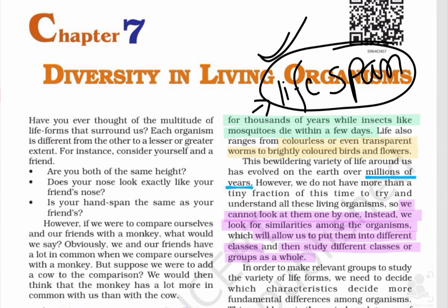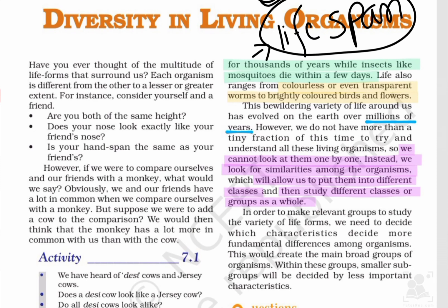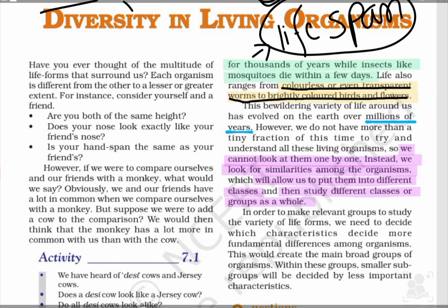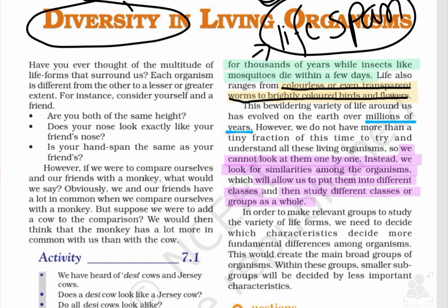Life also ranges from colorless and even transparent worms to brightly colored birds and flowers। अब यहाँ पे color characteristic की बात हो रही है। कुछ organisms जैसे worms colorless या transparent होते हैं, और birds और flowers बहुत ही जादा brightly colored होते हैं। तो यहाँ पे living organisms की diversity बताई है।